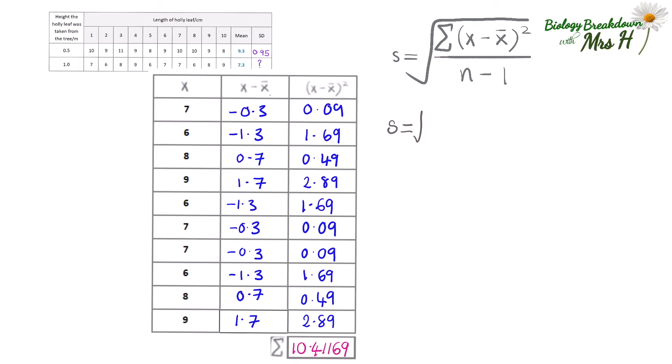Pop that into the formula and divide by n minus 1 which is 9, that gives you 1.156854 recurring. Then do the square root. The standard deviation is 1.16 and if you want to you can practice that with the stat mode on your calculator.